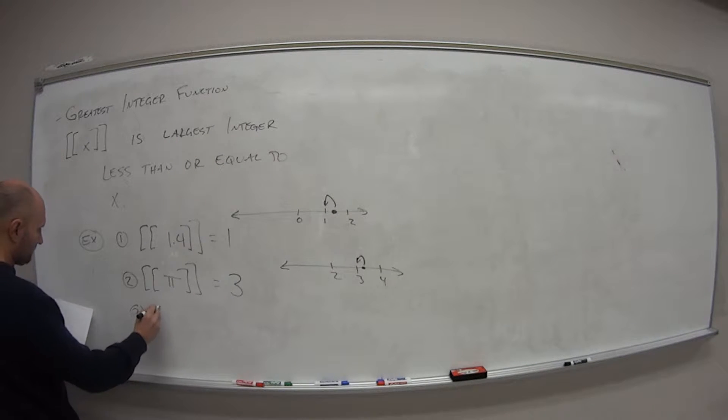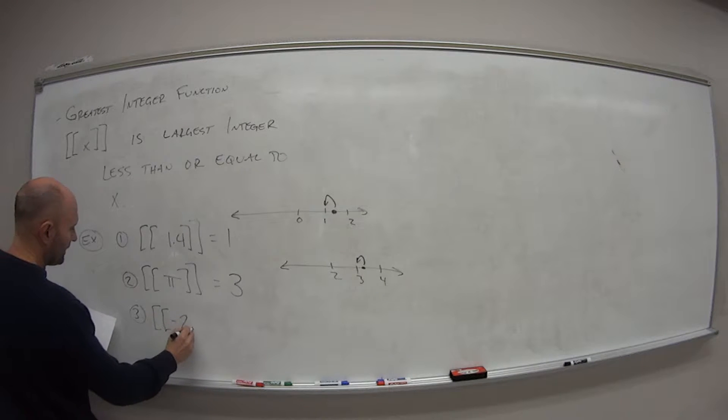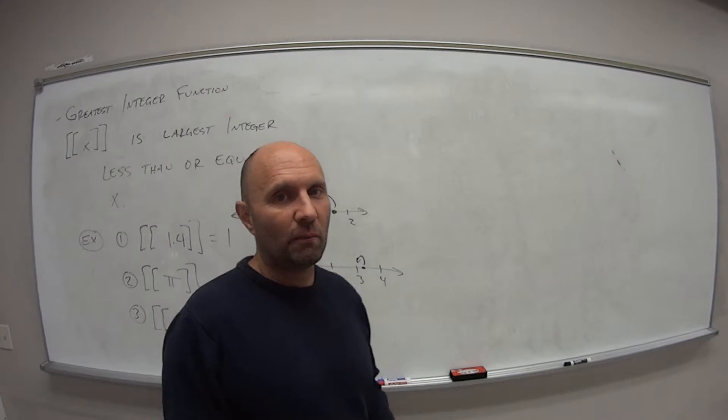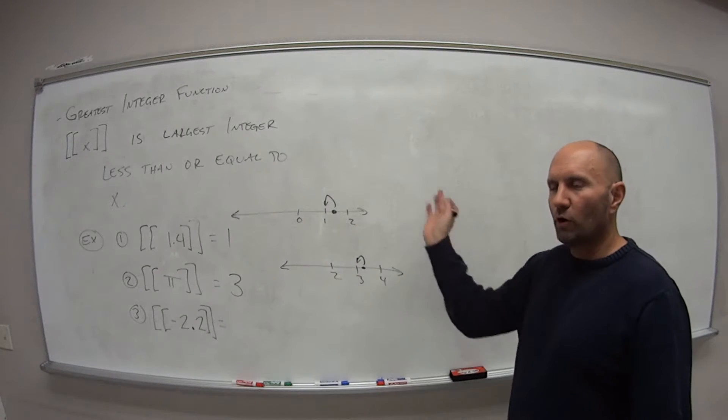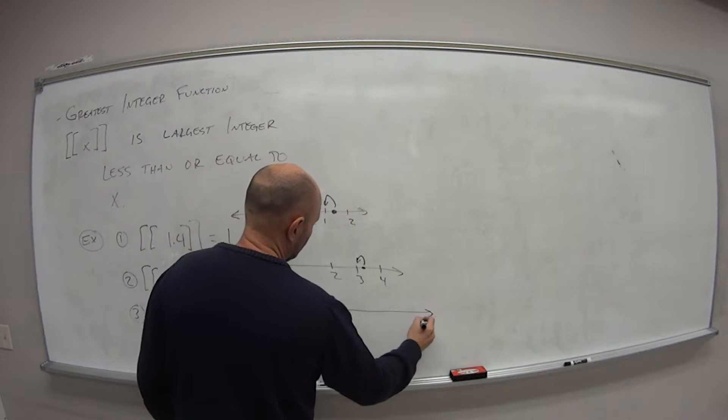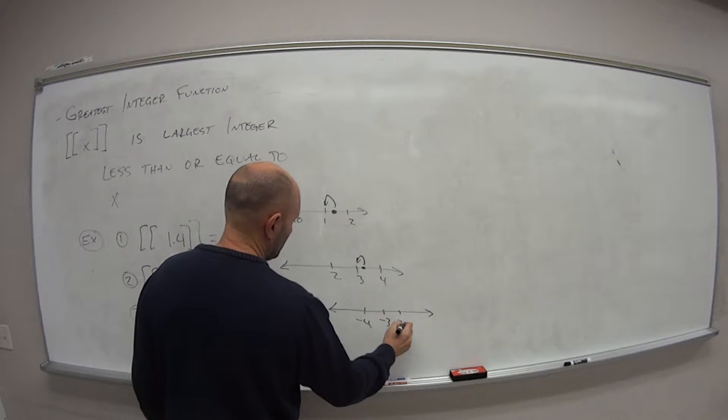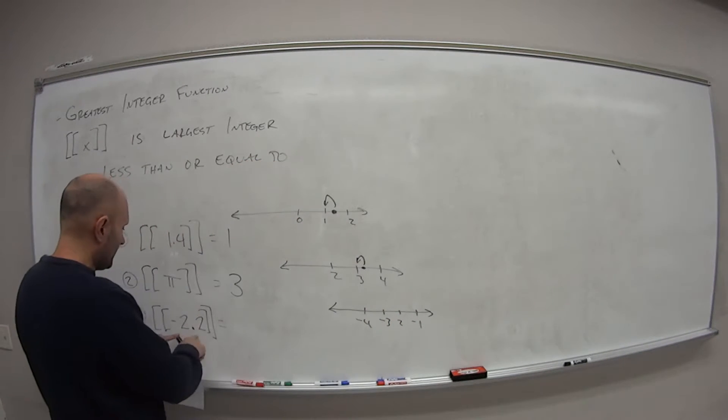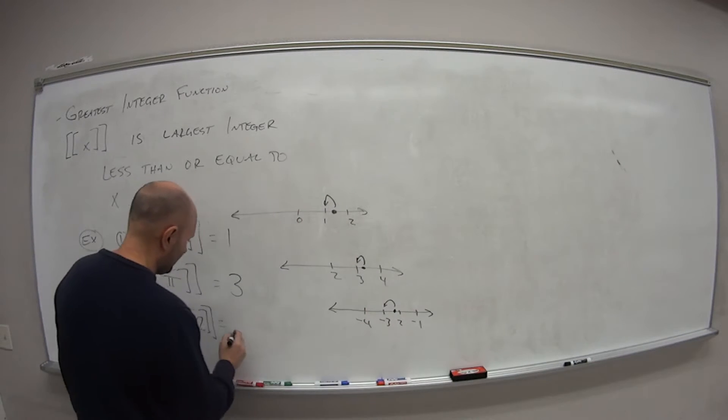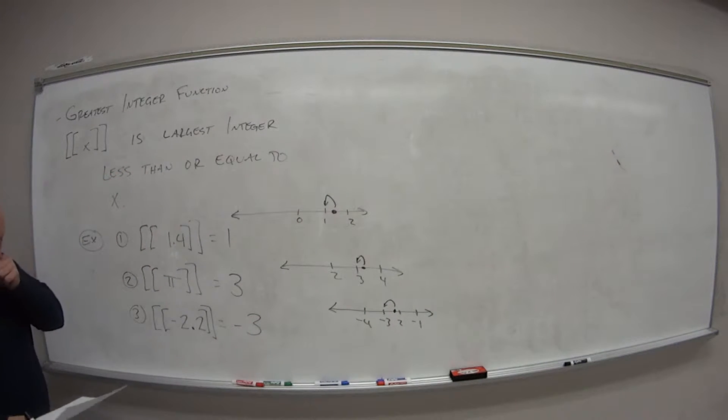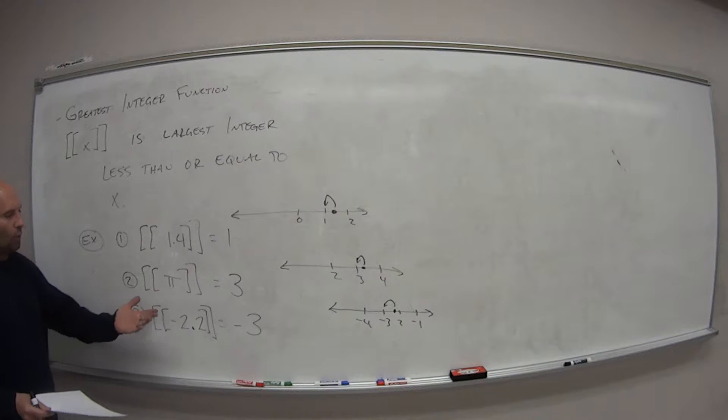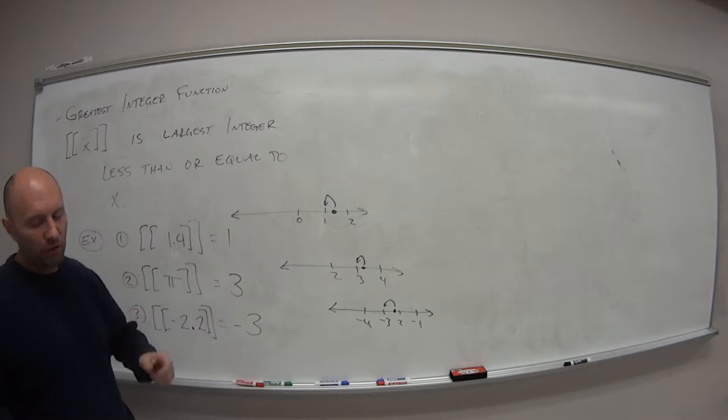What if I have the greatest integer of negative 2.2? This is why I suggest using a number line. Because these are pretty easy. 1.4 goes back to 1. 7.2 goes back to 7. But if I draw the number line here for this one. So negative 4, negative 3, negative 2, negative 1. Negative 2.2 is about here. And I have to go to the left. And the first integer I hit to the left is negative 3. So just be careful with that.